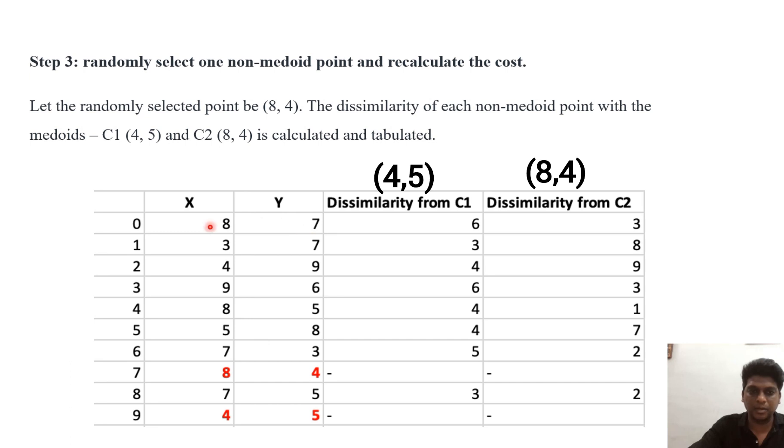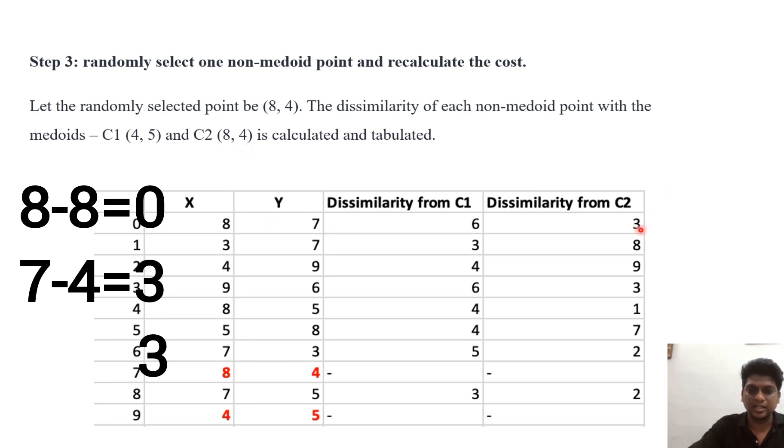Now consider the point 8,7. 8 minus 4 that is 4 then 7 minus 5 is 2. So 4 plus 2 is 6. Now dissimilarity from C2. The same point 8,7. 8 minus 8 is 0, 7 minus 4 is 3. So 0 plus 3 is 3. Likewise you have to complete all the points.